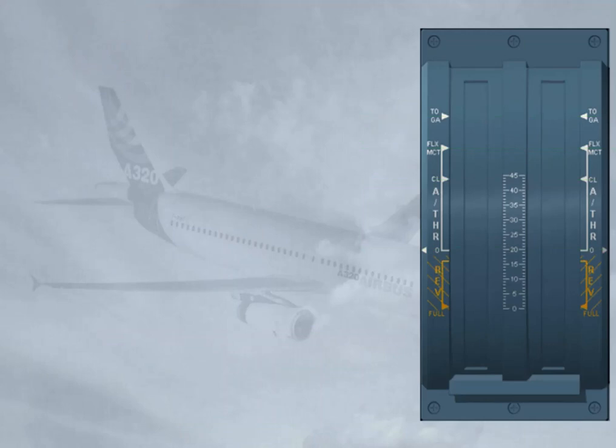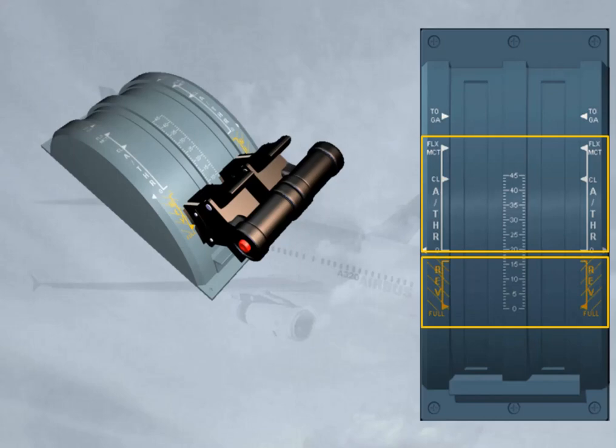The autothrust can only work when the thrust levers are set forward of the idle detent and up to the climb detent, or MCT detent in case of engine failure. If the thrust levers are set by the pilot in the reverse position, the autothrust cannot operate. Note: the alpha-floor function is an exception, which will be covered later on.